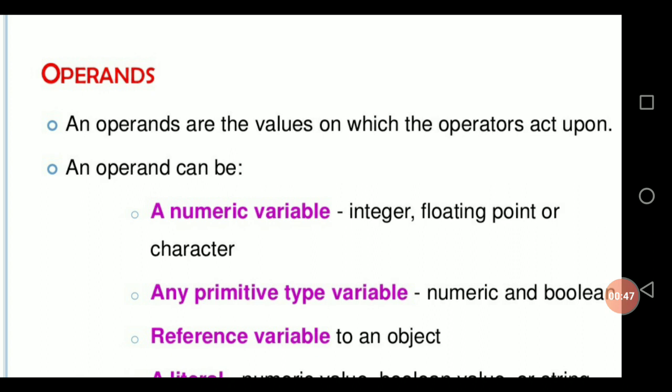Operands are the values on which the operators act upon. An operand can be a numeric variable, any primitive type variable, reference variable, or a literal. A numeric variable may be integer, floating point, or character. A primitive type variable may be numeric or boolean. A reference variable may be an object. A literal should be a constant.